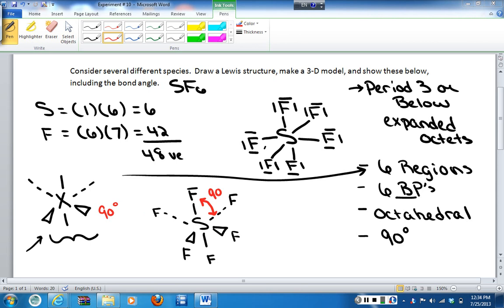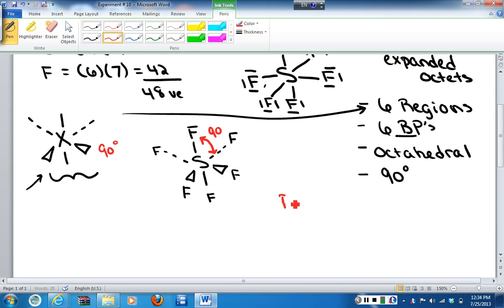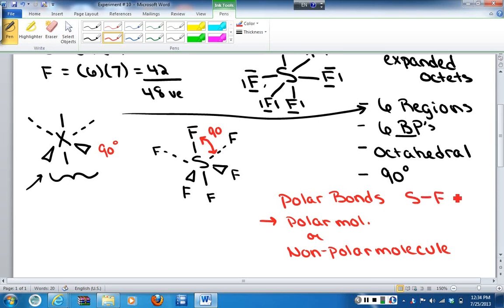One additional thing to consider with this molecule is the polarity. And even though experiment 10 doesn't ask for it, you can look and see that with this structure we do have polar bonds. So this means that we can have either a polar molecule or a non-polar molecule. So we have to determine, do I have a net dipole moment? We have our polar bonds because we know sulfur and fluorine do not have the same electronegativity. Therefore those electrons in that bond will not be shared equally. But then we have to look at the overall molecule itself.